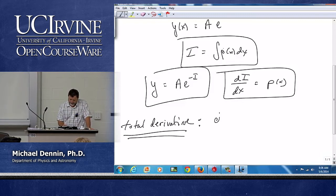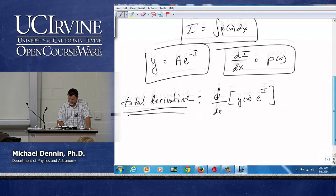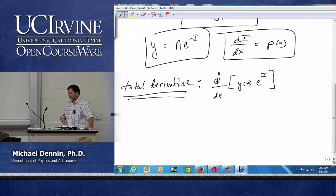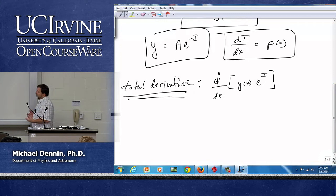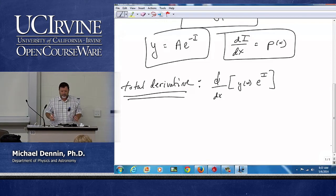So the total derivative we're going to look at here is d by dx of the quantity y times e to the i. Now, because it is a trick, initially you might not say, okay, well, why is that so useful? But let's see what happens.